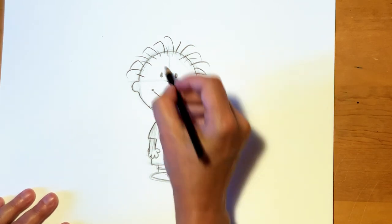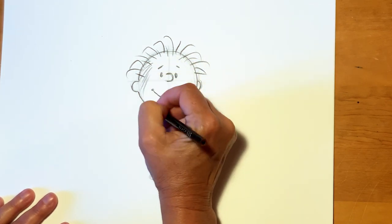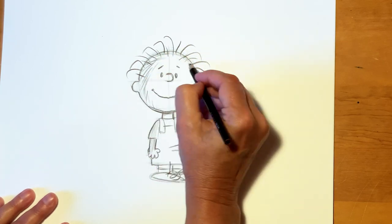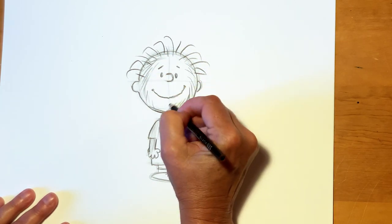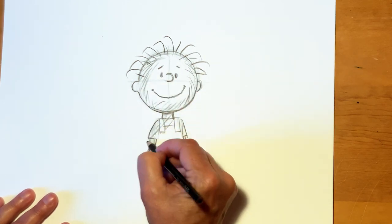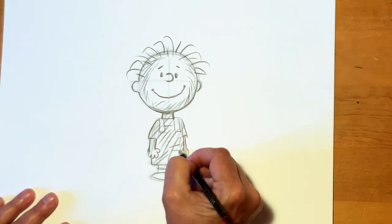Then the fun part about Pigpen is adding all the dirt. So, we're going to just do some rough lines all around his face, up in his hair. Don't put it right over his features. Just kind of all around the outside. Then we're going to add it to his overalls. He's a mess.